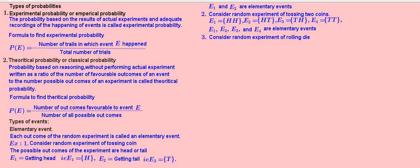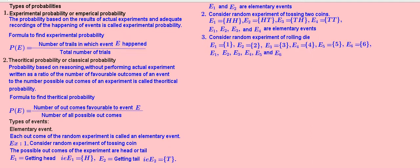Example 3: Consider the random experiment of rolling a die. Event 1 — getting 1 up. Event 2 — getting 2 up. Event 3 — getting 3 up. Event 4 — getting 4 up, etc. Here, E1, E2, E3, etc. are elementary events.